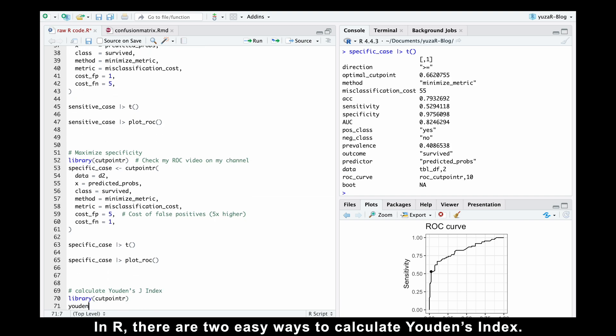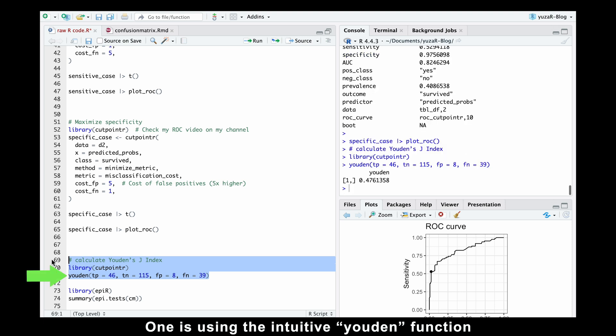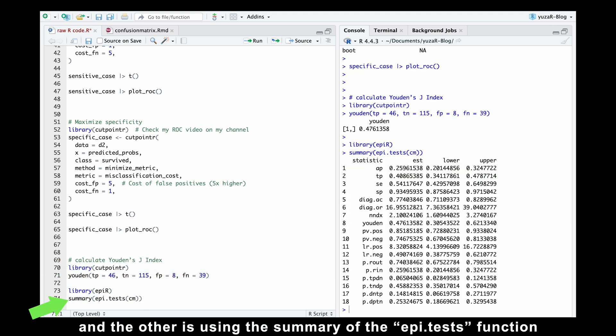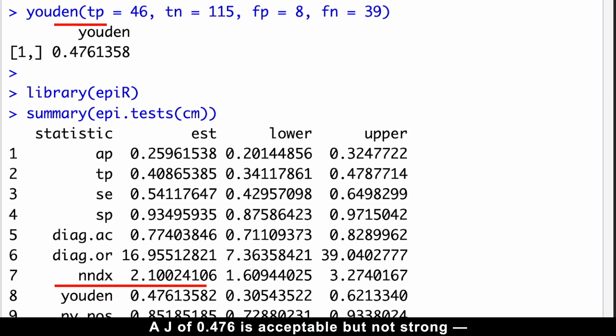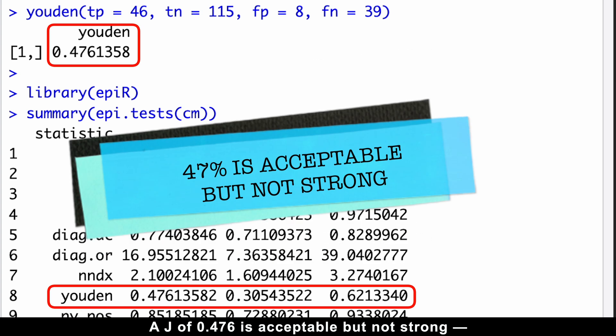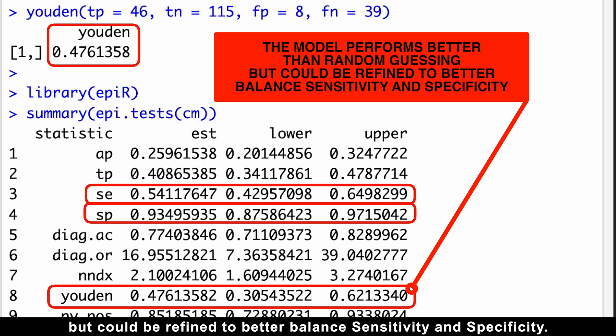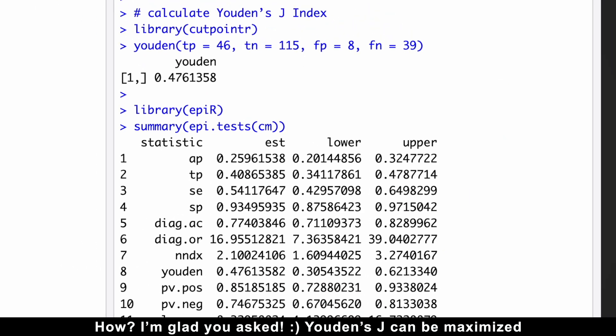In R, there are two easy ways to calculate Youden's index. One is using the intuitive Youden's function from the cutpointer package and the other's using the summary of the aptests function from the epiR package. A J of 0.476 is acceptable but not strong. It tells us the model performs better than random guessing, but could be refined to better balance sensitivity and specificity. How? I'm glad you asked.